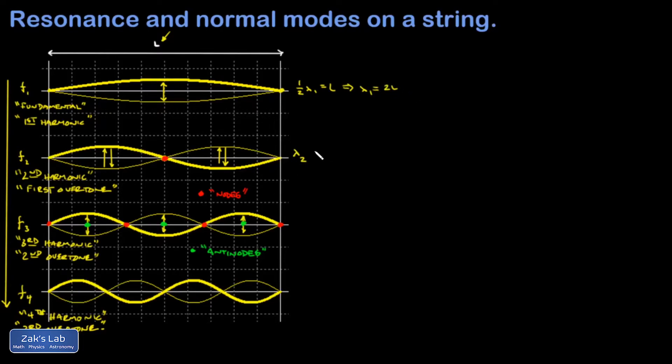For the second harmonic, I have lambda two equals L. That's exactly one wavelength. In my third picture, that's one and a half wavelengths or three halves. Lambda three, that's equal to L. And when I solve for lambda three, I get two L over three.